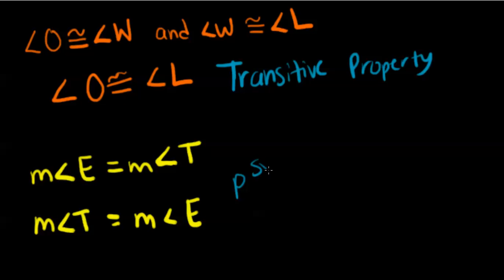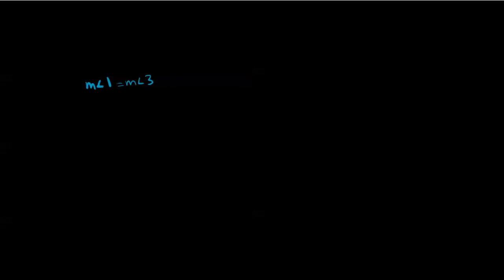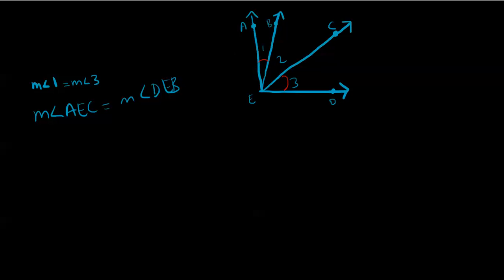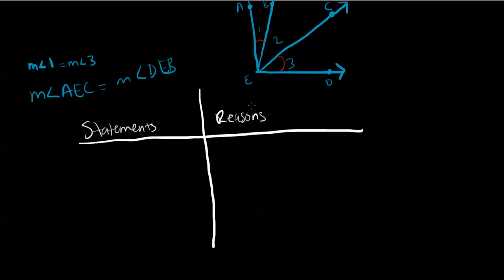Now we're going to look at something called a proof. A proof is a convincing argument that uses deductive reasoning. A proof logically shows why a conjecture is true. We're going to look at two-column proofs. We're given that the measure of angle 1 equals the measure of angle 3, and we need to prove that the measure of angle AEC equals the measure of angle DEB. We also have a diagram. In a two-column proof, one column is our statements and the other is our reasons.